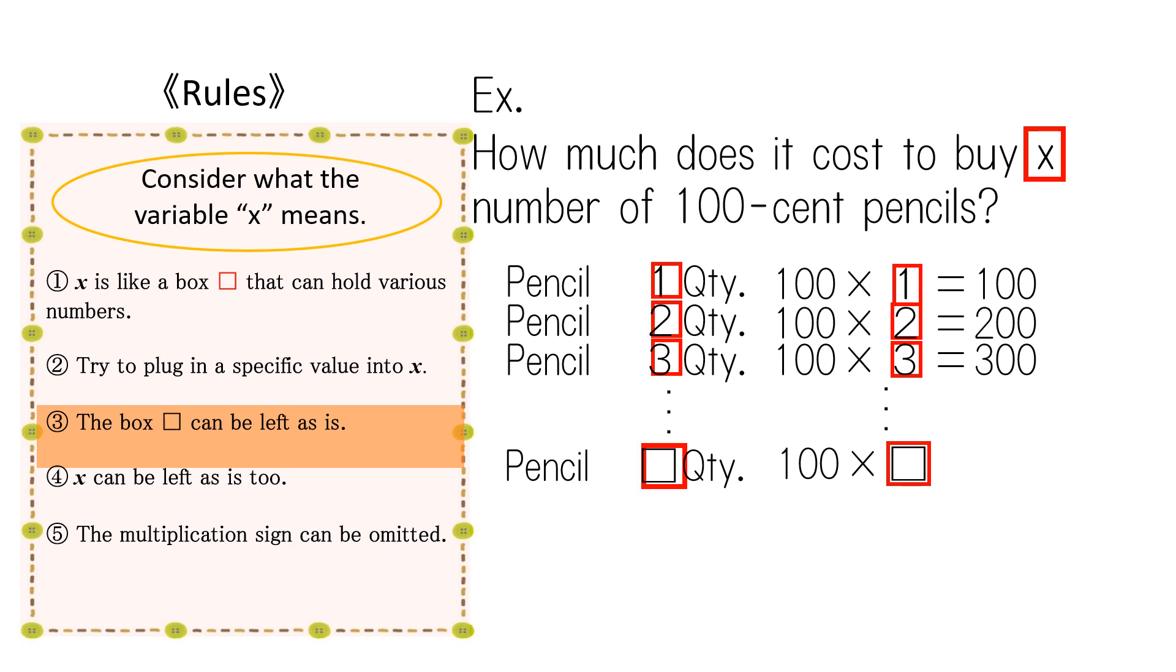The box can be left as is. The unit is books, so we have box books 100 times box. Just like the box, x can be left as is too.